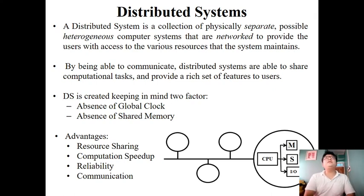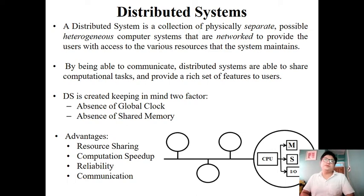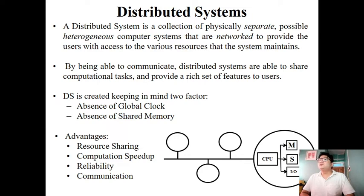With advancements in technology, we can connect multiple computer systems together in a network — this is called a distributed system. There are several advantages of doing so: resource sharing, computational speed-up, increased reliability, and communication. When designing a distributed system, it is important to keep in mind that there is an absence of a global clock and an absence of shared memory, meaning there is no common memory location where all connected users can store their information.